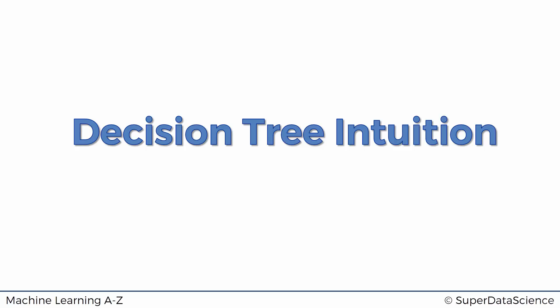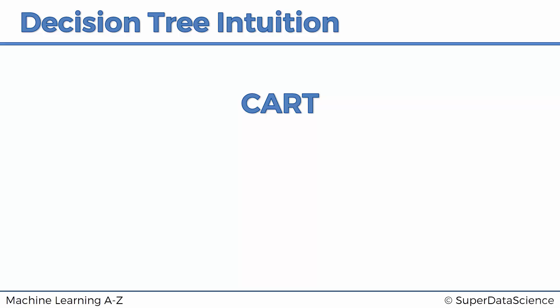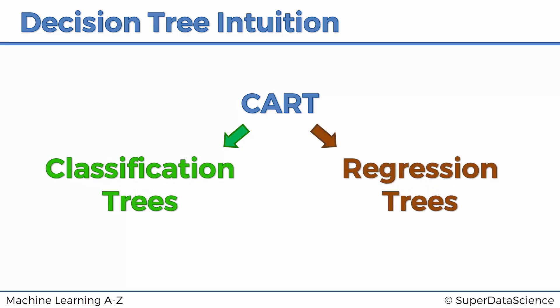Hello and welcome back to the course on machine learning. In today's tutorial, we're talking about decision trees and the intuition behind them. So you may have heard the term CART, which stands for classification and regression trees. This is an umbrella term that encompasses two types of decision trees, and as you've correctly guessed, they are the classification trees and regression trees.